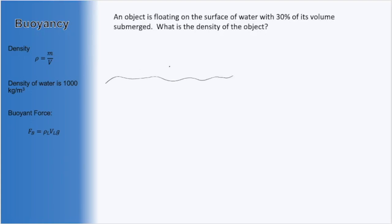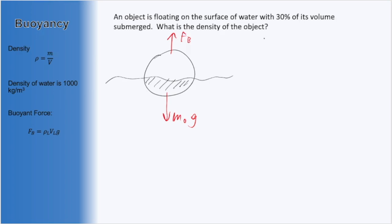Here is the surface of our water. There's some object — it doesn't tell us what shape, but let's draw a ball — floating on the surface with only 30% of it actually submerged. We're on Earth, so there's going to be the weight of this object, given by the mass of the object times gravity, with all quantities of the object subscripted with O. The water will push us up, so we have the buoyant force going upwards. These will be our only two forces. The sum of Fy equals mass times acceleration in the y direction: buoyant force minus mass of the object times gravity equals zero.